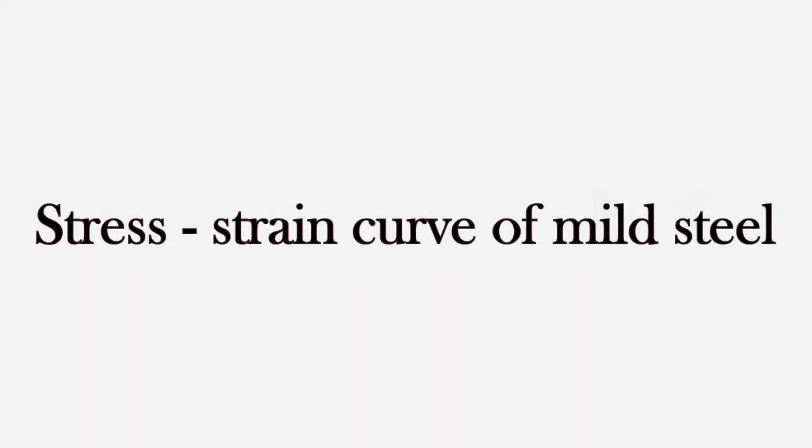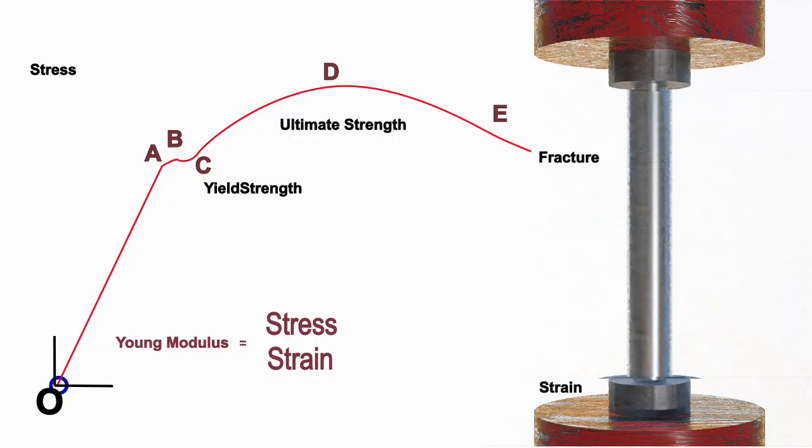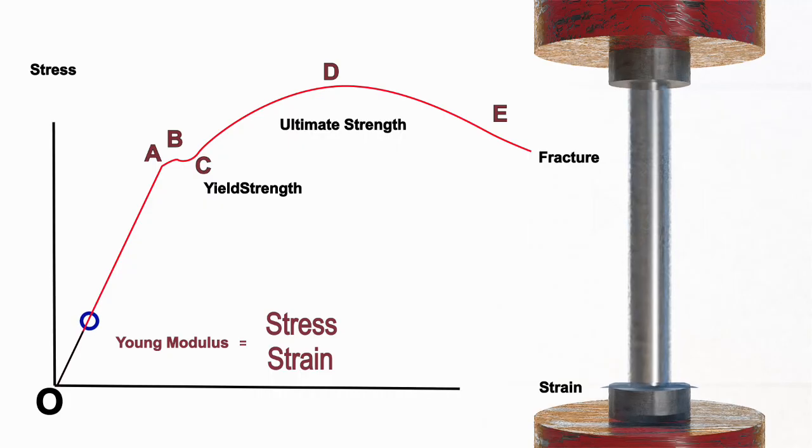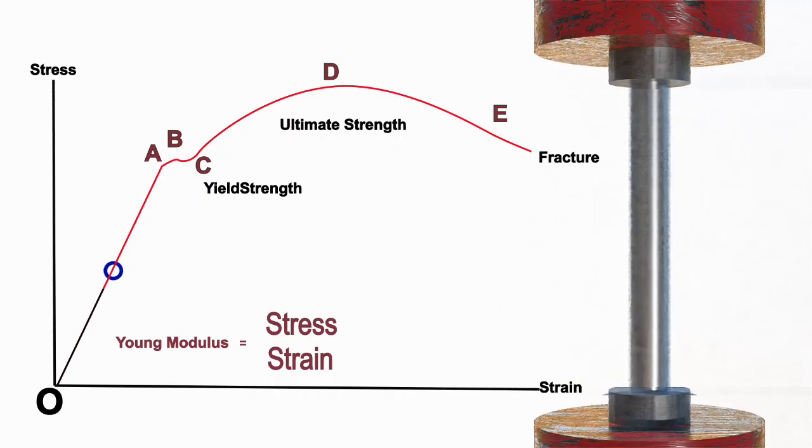This is a stress-strain curve of mild steel, what we are seeing in the animation. From O to A, it is a proportionality limit, where we follow Hooke's law.